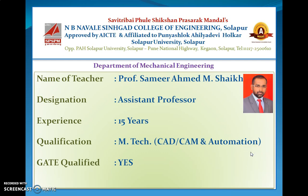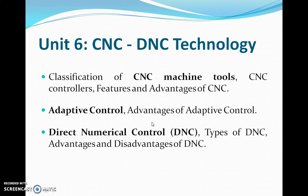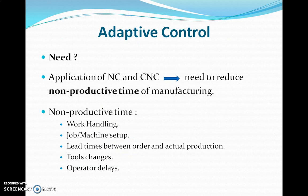In the previous lecture, what we have seen is the features and advantages of CNC. In today's lecture we will try to cover what is adaptive control and what are the different positioning parameters that will affect the adaptive control. Before we actually want to know what is adaptive control, let us try to understand what is the need of adaptive control.